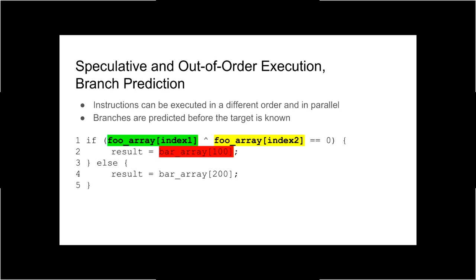In this code example, in the first line you can see two accesses to a foo array. It looks as if the CPU would first load the value of foo array at index one, then foo array at index two. But memory accesses can have quite high latency, so the processor can perform these two memory accesses in parallel, reducing the total execution time of that first line.